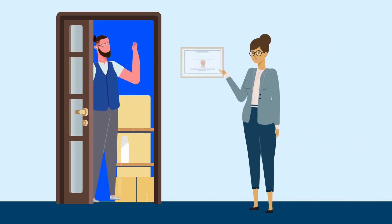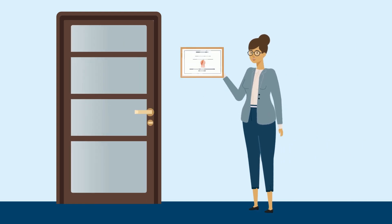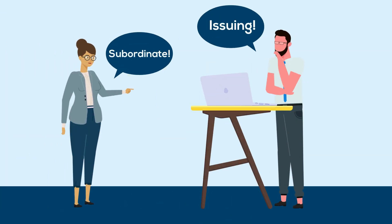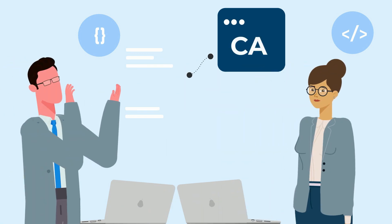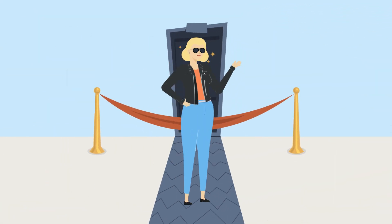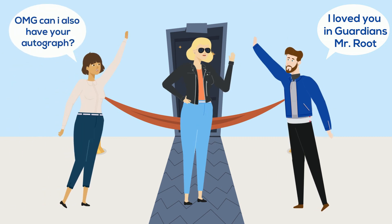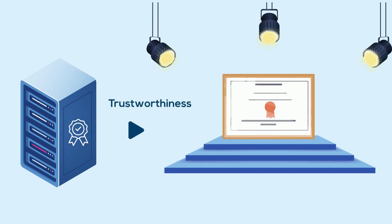The issuing or subordinate CA, on the other hand, acts as the primary entity for distributing certificates to end users. The reason it's dubbed subordinate or issuing is because it operates or issues certificates under the trust umbrella of the root CA. You can probably see how clever engineers are when it comes to naming things. For the certificates it issues to be trusted, the root CA must sign the subordinate CA. This signing process effectively ensures that any certificate issued by the subordinate CA inherits the trustworthiness of the root CA.